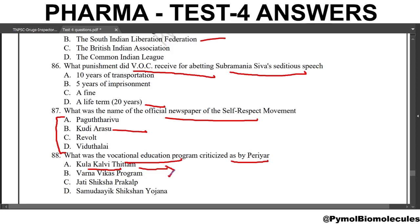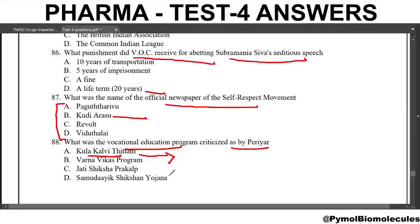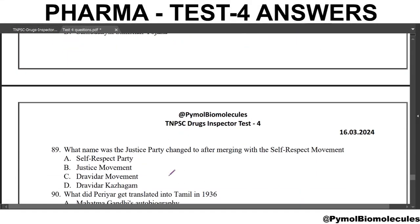Rajaji, the Chief Minister of Madras state from 1952 to 1954, introduced a vocational education program known as the Kula Kalvi Thittam. It was criticized by Periyar. Next question: what name was the Socialist Party changed to after merging with the self-respect movement? The answer is Dravidar Kazhagam.